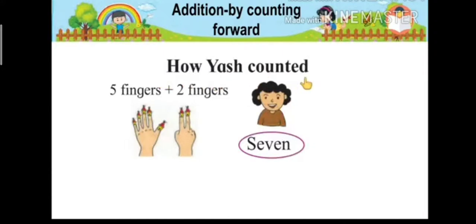How Yash counted? Now let's see how Yash counted. Yash took five fingers first. Because whether you do two plus five or five plus two, the answer will be the same. So Yash took the big number first. Then he added two fingers forward from five. It means six and seven.